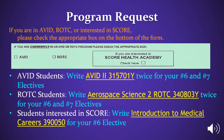Program Requests. If you are currently in AVID, ROTC, or interested in the SCORE Health Academy, please check the appropriate box on the bottom of the form. AVID students: write AVID 315701Y twice for your number 6 and number 7 electives. ROTC students: write Aerospace Science 2 ROTC 340803Y twice for your number 6 and number 7 electives. For students interested in joining the SCORE Health Academy, write Introduction to Medical Careers 390-050 for your number 6 elective.